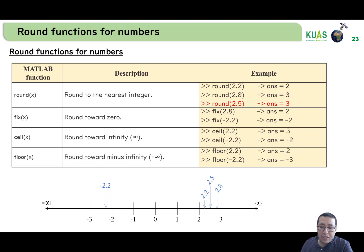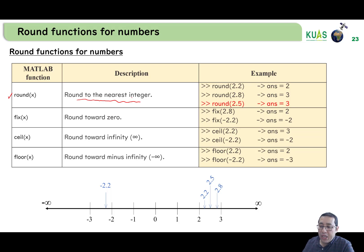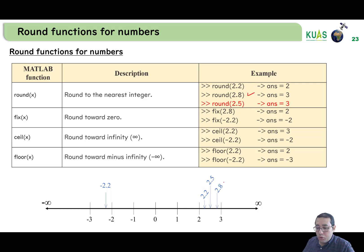The first one is the round function, which rounds any number to the nearest integer. For example, round(2.2) — 2.2 is closest to 2, so the answer is 2. And for round(2.8), 2.8 is closest to 3, so the answer is 3.